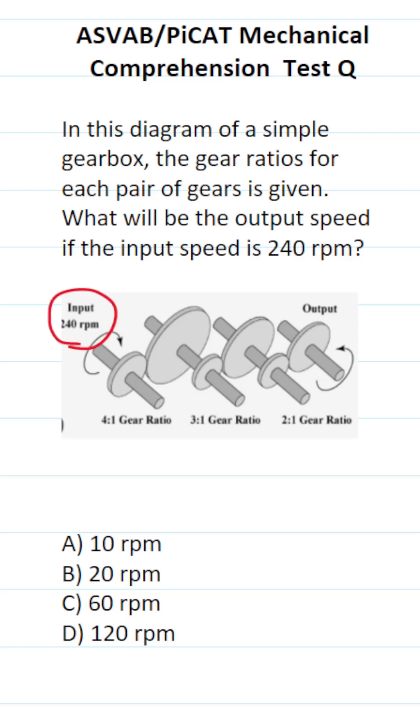So our input speed is right here, it's 240. Don't pay attention to the size of the gears in this gearbox. Instead, we're going to be calculating the output speed in terms of RPMs, and we're going to use these gear ratios to figure out the output speed.